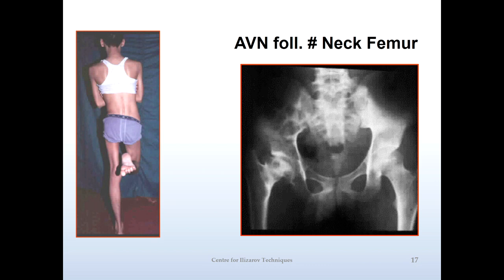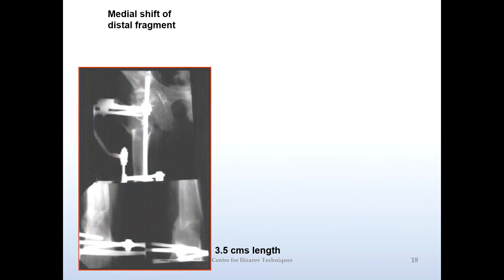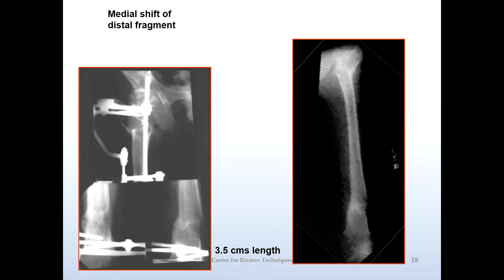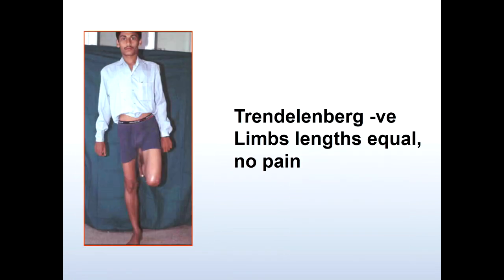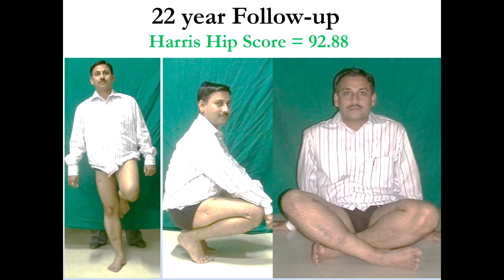Let's look at this young chartered accountancy student — Trendelenburg positive. These are very old X-rays. The trochanter is here, the tip of the femoral head is here. We did this osteotomy percutaneously: medially shifted it, lengthened him, laterally shifted it. This old X-ray shows the femur. He got rid of his lurch, his lengths are equal, he has no pain — that's one year after surgery. And then 22 years after surgery, this is how he looks. He works in a multinational corporation in Mumbai.